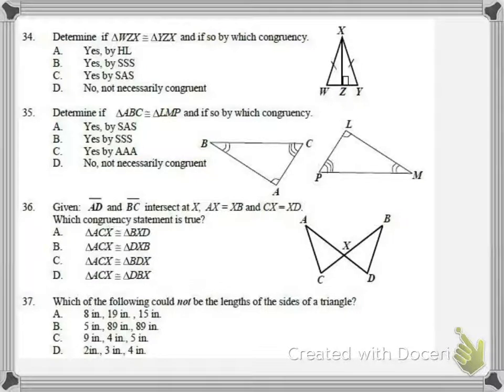This is now part three of the geometry first semester final review. We left off on number 33, so let's just get started on number 34. In 34 you determine if triangle WZX is congruent to triangle YZX, by which congruency.